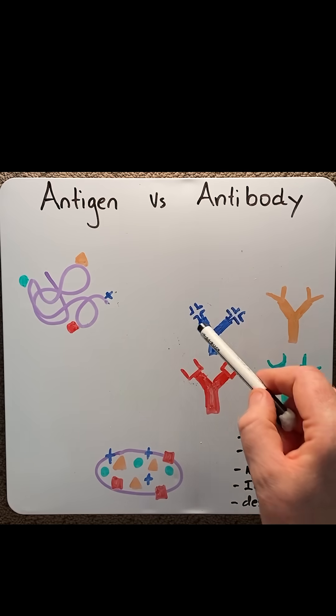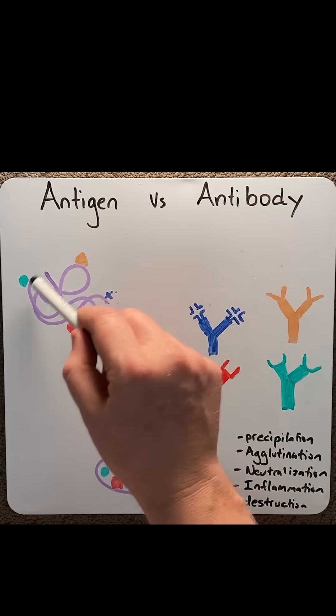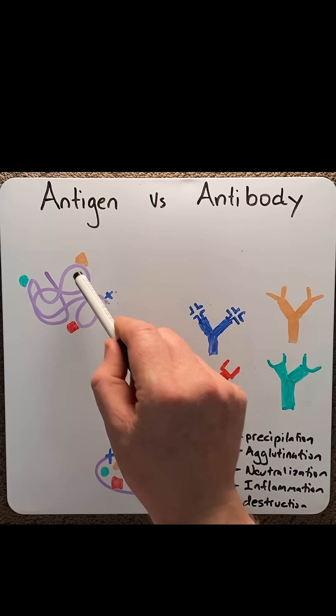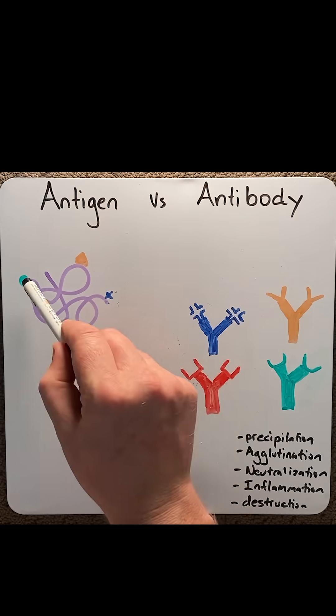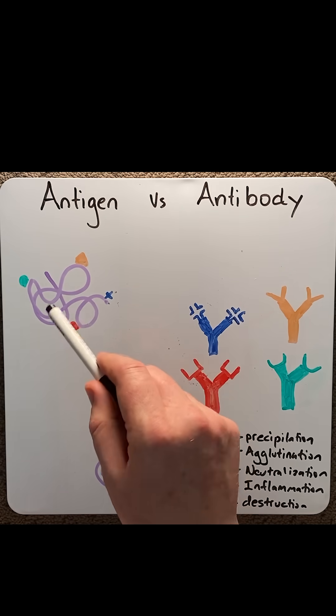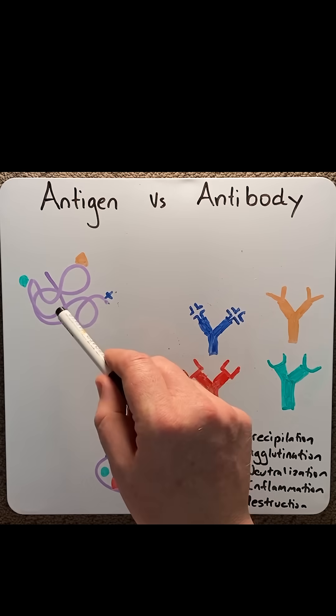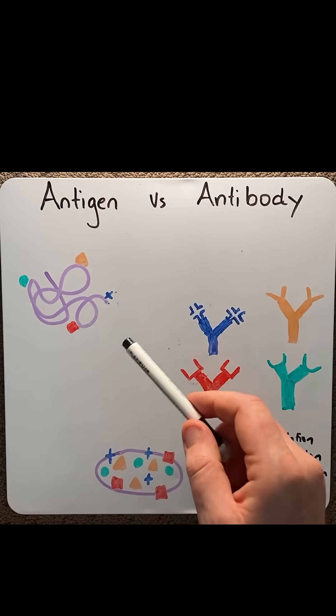Single antibodies aren't produced against a whole antigen, rather particular chemical regions of the antigen known as antigen determinants or epitopes is where antibodies will bind.